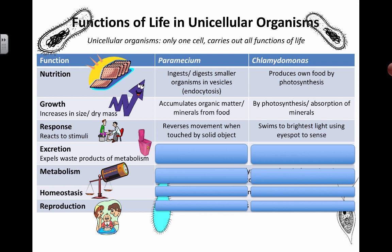Reaction to stimuli: both of these organisms can respond to external stimuli. What's been observed in paramecium is that if they're touched by a solid object, they tend to reverse direction — it's a built-in, innate kind of behavior. Chlamydomonas can respond to actual light intensity, and they use an eye spot to be able to sense that.